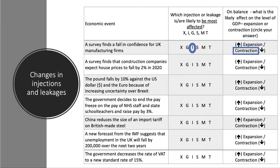For the house prices example, my instinct is that would be a possible fall in investment. Construction companies may well invest in less capital machinery to build new homes, and again that would cause a contraction. Third: the pound falls by 10%, depreciating against the US dollar and the euro, perhaps because of increasing uncertainty over Brexit.